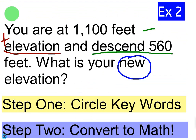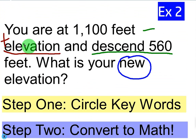There's an example involving money. Let's look at another one. You are at 1,100 feet elevation and you descend 560 feet. What is your new elevation? Again, we're going to circle or underline keywords. Elevation is a keyword — if you're 1,100 feet of elevation, you're above sea level — so I put a plus next to elevation. The word 'descend' means go down, so I put a negative sign next to 560 and underline the word descend.